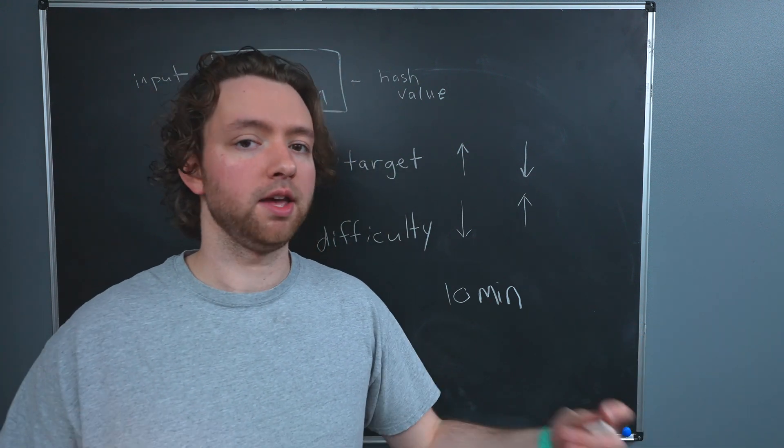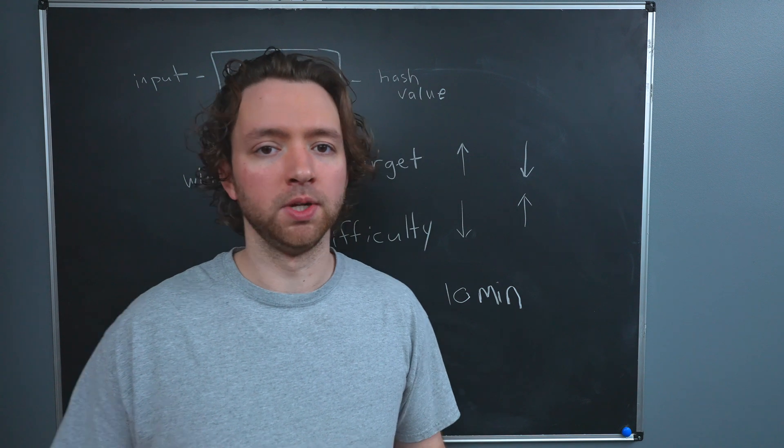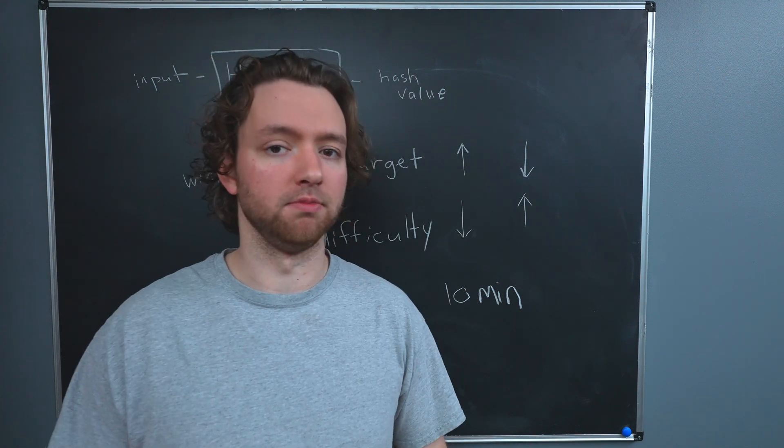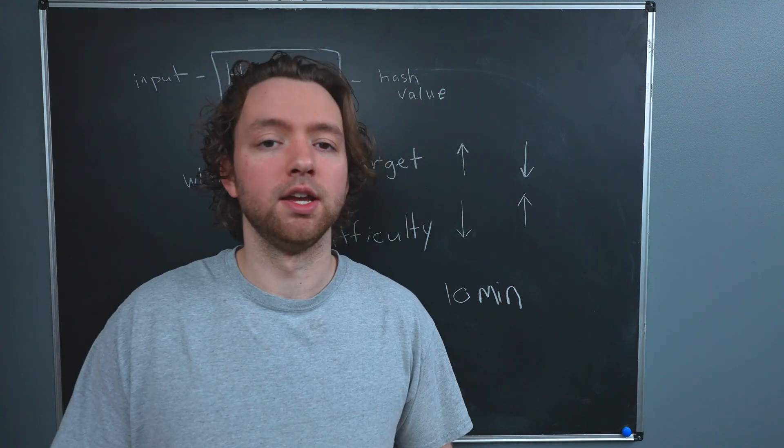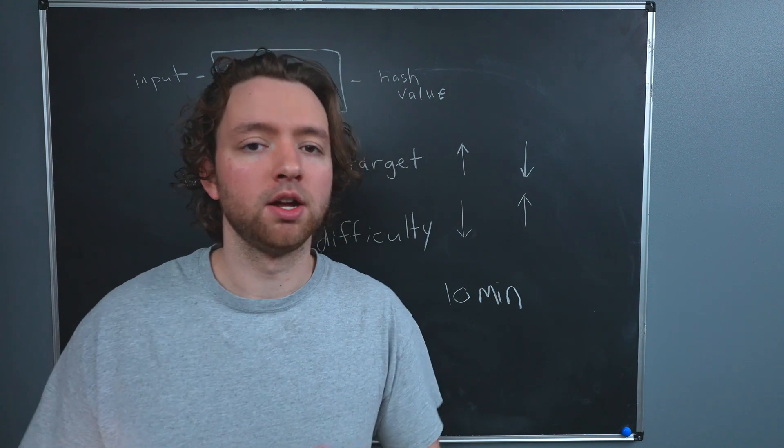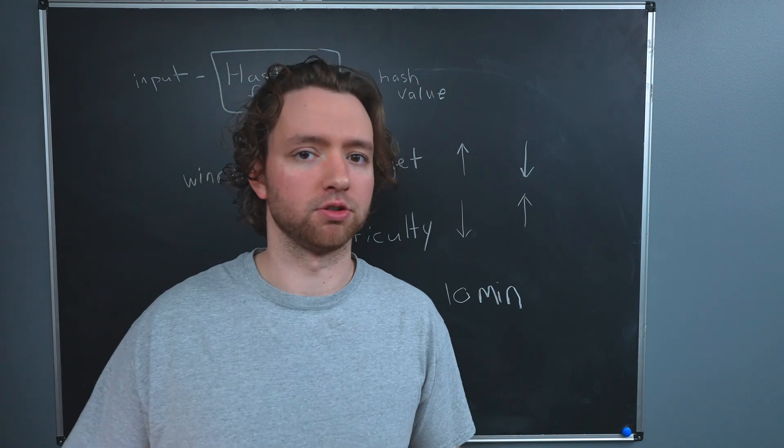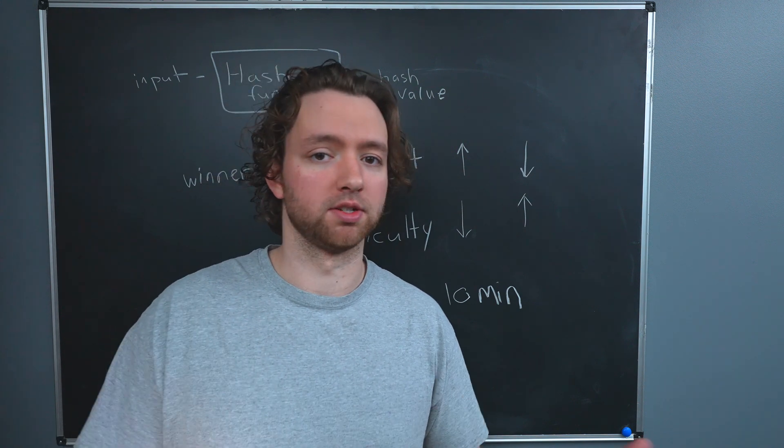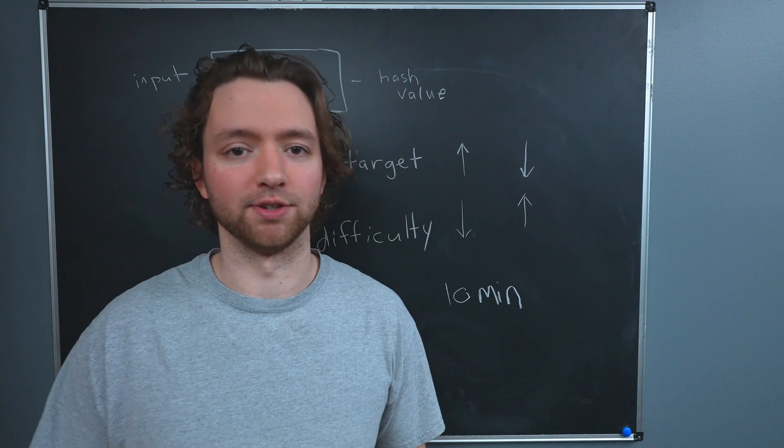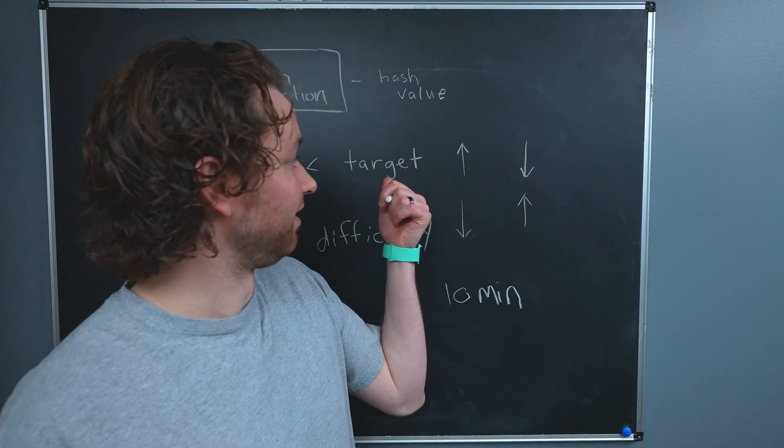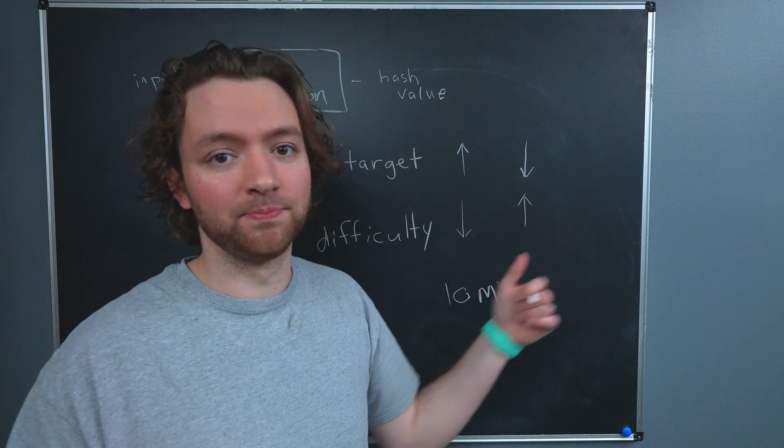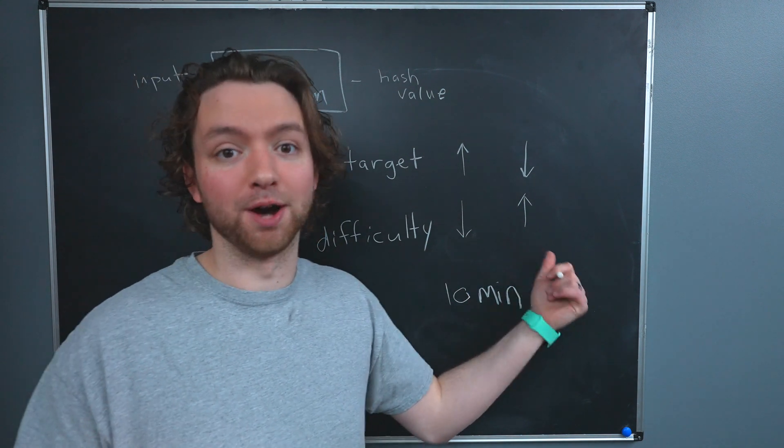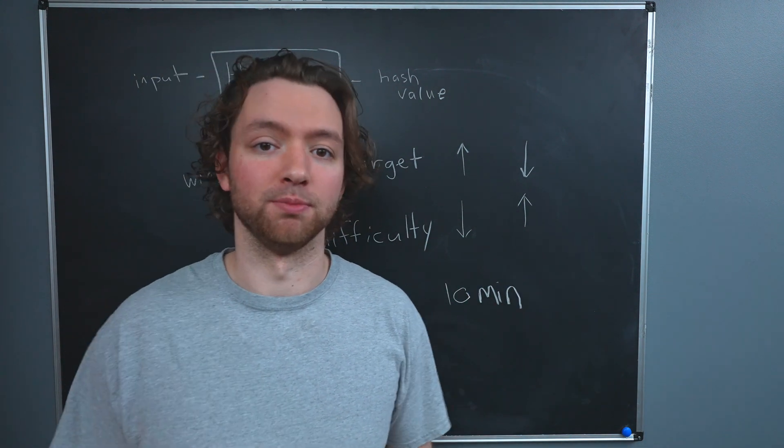So the controversy is, hey, is Bitcoin really scalable? As more and more people adopt it, the energy consumption of Bitcoin continues to go up and up and up. But we're not getting a faster rate of new Bitcoin or we're not getting faster transactions. Ultimately, the Bitcoin network stays pretty much the same. The only difference is the target has gone down and down and down. Also known as the difficulty has gone up and up and up, but the end result is pretty much the same.